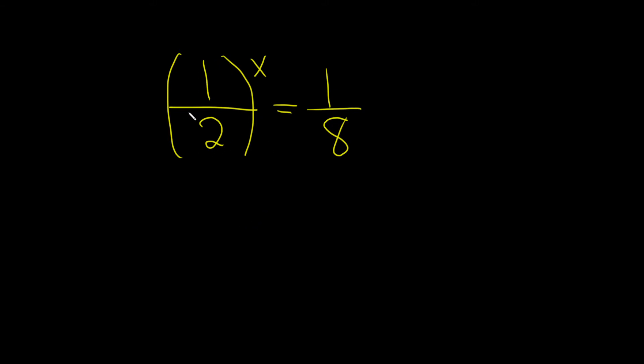So the base we're going to shoot for is 1 half, because we already have a 1 half on the left. So this is 1 half, parentheses, to the x. And 1 eighth can be written as 1 over 2, parentheses, cubed.